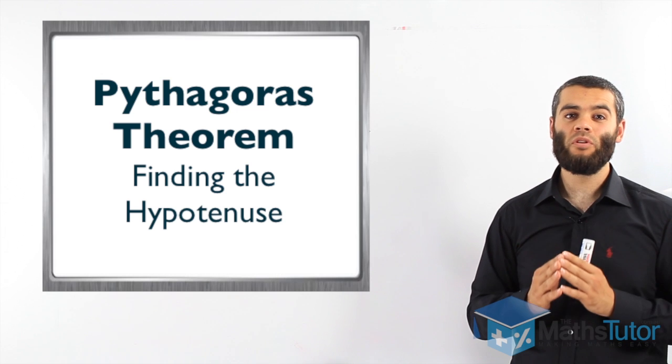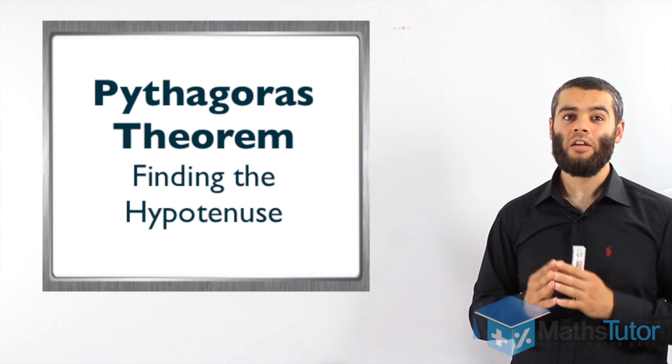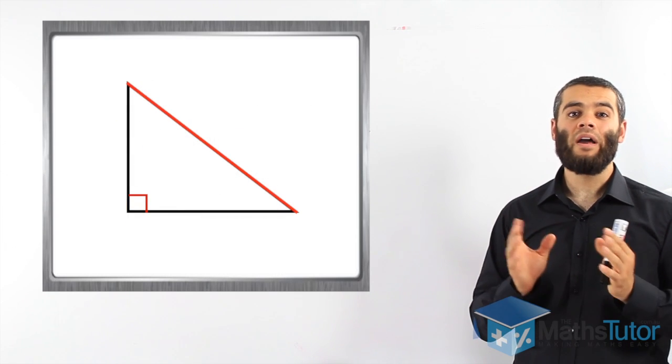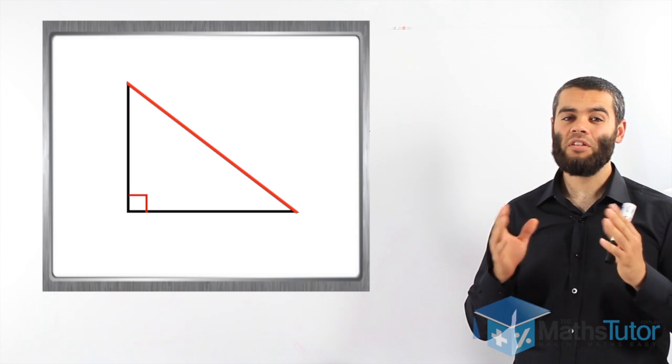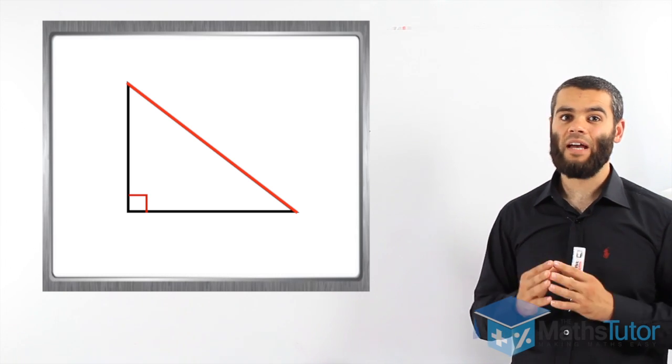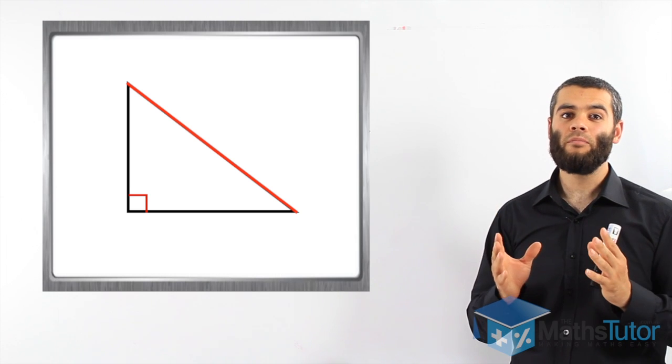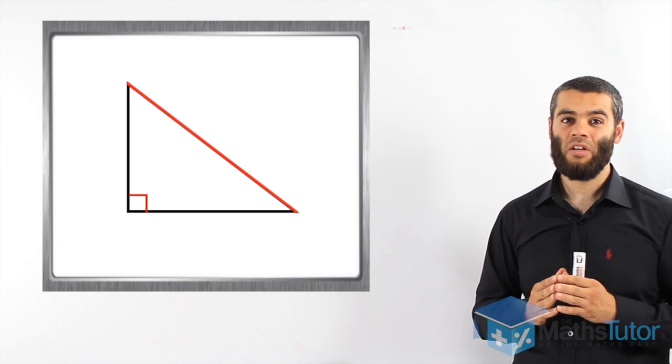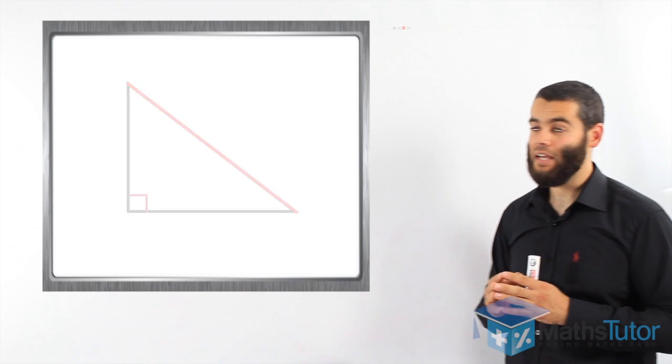He discovered a very important theory that we actually apply throughout mathematics. And this theory has got to do with right-angled triangles. What did he find out? He found out a special relationship that exists in all right-angled triangles and their sides. Let's see what he actually found out.